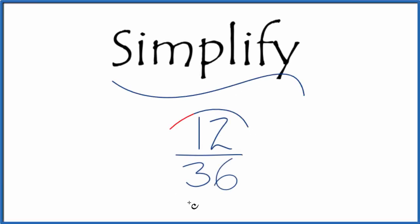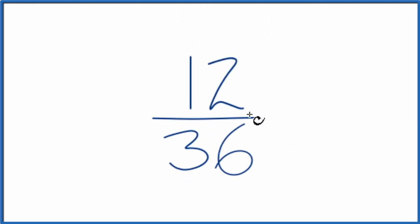Let's simplify the fraction 12 over 36. We want to find another fraction that is equal to 12 over 36. It has the same value, it's just that we've reduced it to its lowest terms.